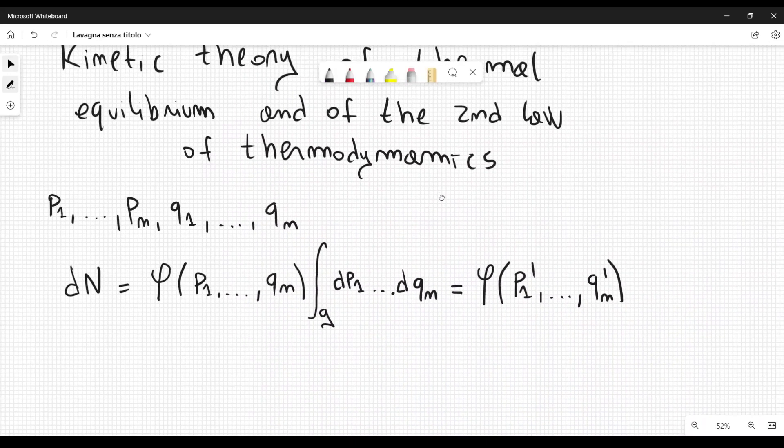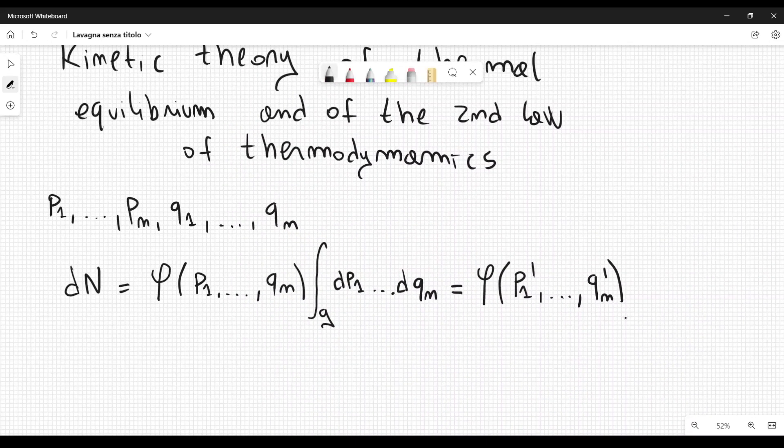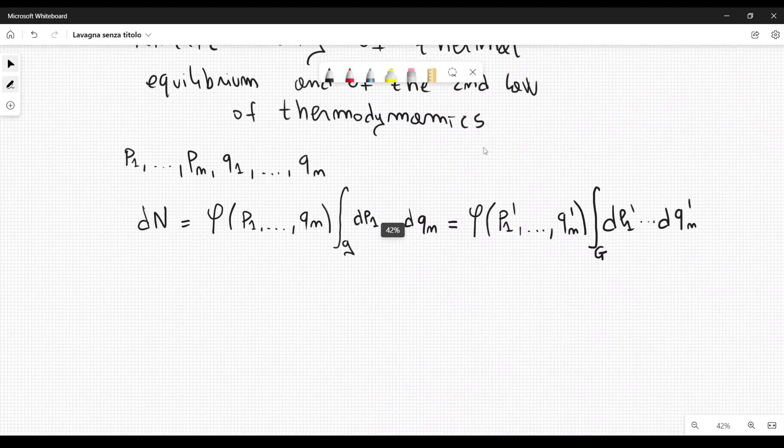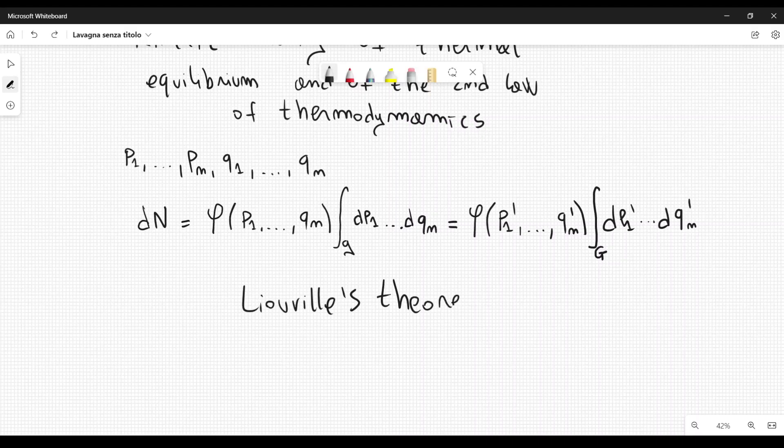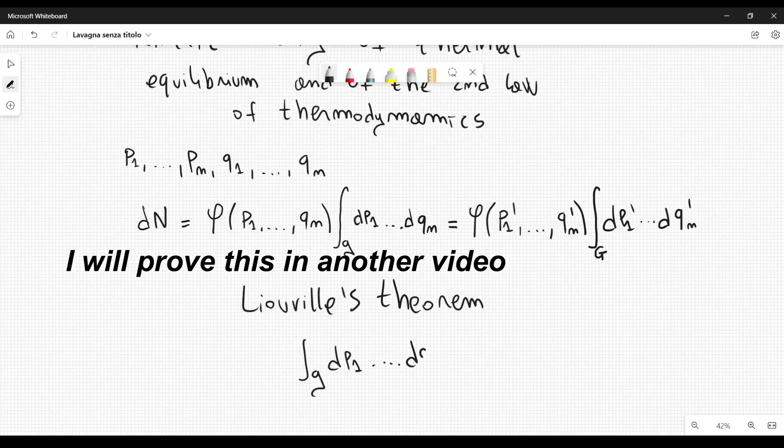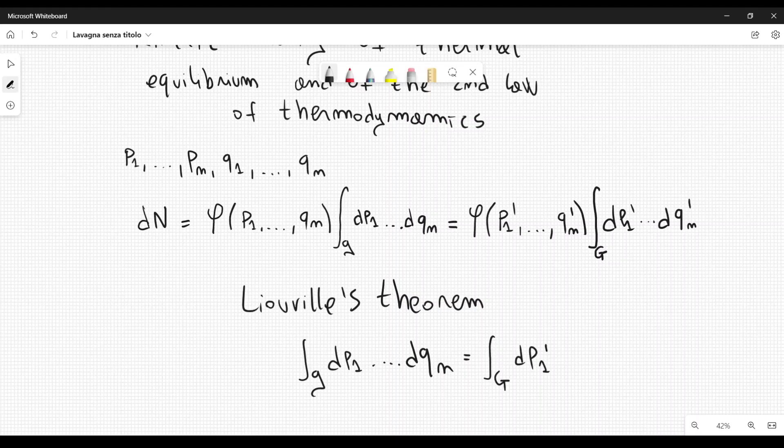These are the state variables that describe the system at t equal to zero, at the initial time. So in principle we have to integrate over another infinitesimal region, but it might be different, so we call it capital G. And then here we have dP1 prime dot dot dot dQn prime. At this point Einstein made use of Liouville's theorem, which states that the infinitesimal volumes in phase space are equal.